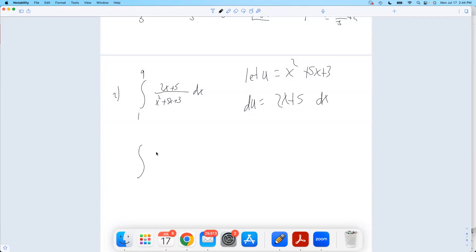So this will be a 1 over u du, but I got to change my limits. My limits of integration, these were x equals. I need u equals, so I need to plug those numbers in here. So when x equals 1, u will be 1 plus 5 plus 3, I think that's 9.